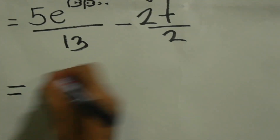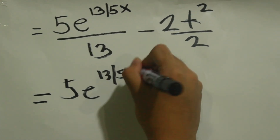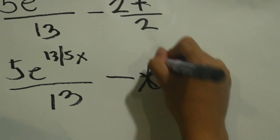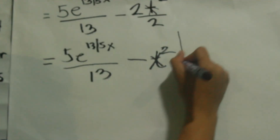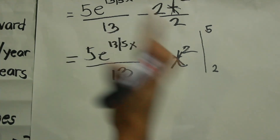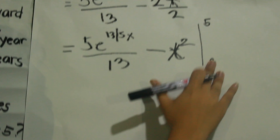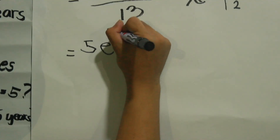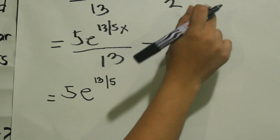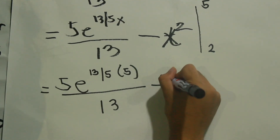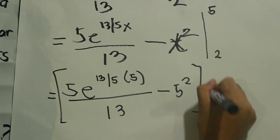Simplifying, that becomes 5e raised to 13 over 5 x over 13 minus x squared, evaluated from 2 to 5. Now we evaluate this definite integral by substituting the upper bound and lower bound and subtracting. Substituting the upper bound x equals 5 gives us 5e raised to 13 over 5 times 5 over 13, minus 5 squared.